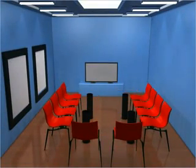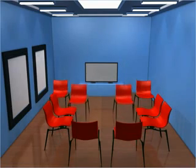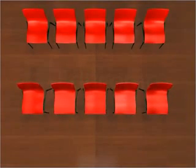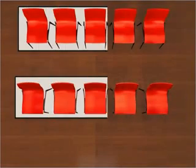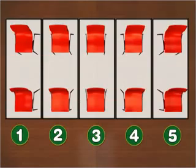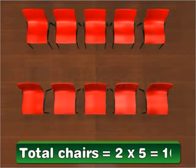You may know that if a certain number of objects form a rectangular arrangement, multiplying the number of rows by the number of columns gives you the total number of objects in the arrangement.